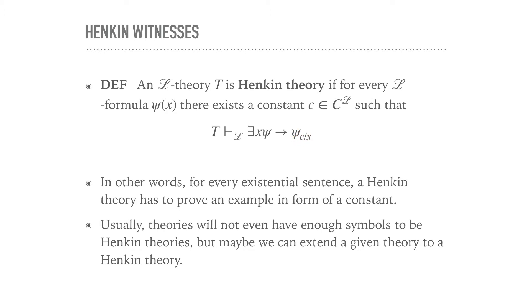Usually, theories will not even have enough symbols to be Henkin theories, because we need these constant symbols before everything to be a Henkin theory. But maybe we can extend a given theory to a Henkin theory. Of course, if we want to do that, we also have to worry about what do we actually add. Do we make this theory actually too powerful? So we have to keep in mind what are we able to prove from such a theory if we extend it to a Henkin theory.